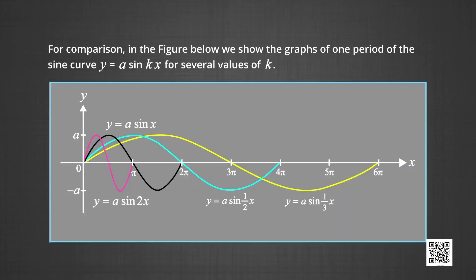For a further comparison, we draw four different functions on the same sheet. The black line represents y = a sin x, the pink line represents y = a sin(2x), the blue line represents y = a sin(x/2), and the yellow line represents y = a sin(x/3). This allows us to compare all four graphs with each other on the same graph paper.